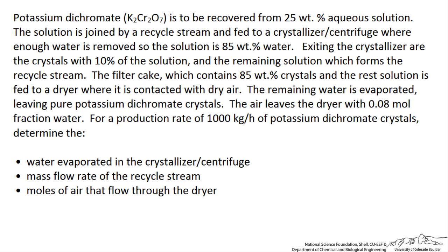We have a salt, potassium dichromate, to be recovered from a 25 weight percent aqueous solution. The solution is joined by a recycle stream and fed to a crystallizer centrifuge where enough water is removed so the outgoing solution is 85 weight percent water. Exiting the crystallizer are the crystals with 10 percent of the solution — that is our slurry — and the remaining solution which forms the recycle stream. The filter cake contains 85 percent crystals and the rest solution, and is fed to a dryer where it is contacted with dry air, causing the remaining water to evaporate, leaving pure potassium dichromate crystals. The air leaves the dryer with a 0.08 mole fraction water.